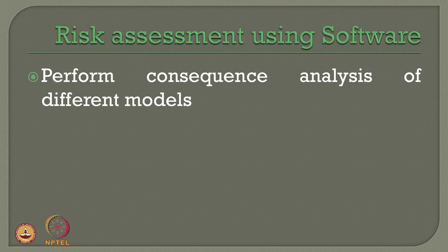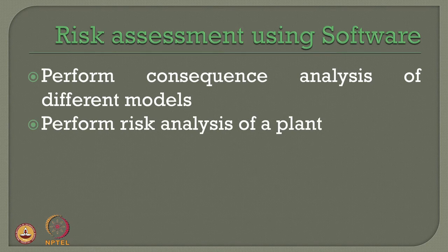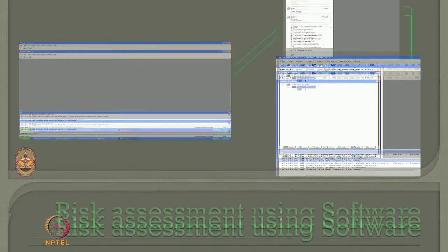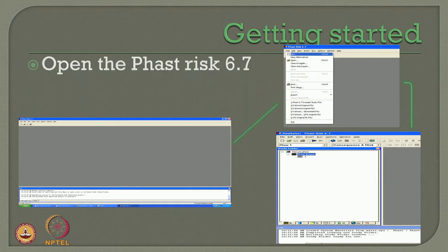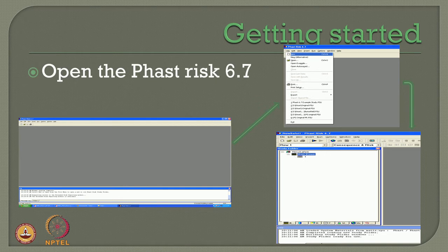We would like to perform consequence analysis using different models and risk analysis of a process plant using the software. The software is PHAST Risk, developed by DNV, which I am going to explain step by step. I will also run a quick video of how this software can be implemented and used by practicing professionals. I am referring to version 6.7, and I would urge viewers to contact DNV Software for the latest version. This lecture will focus on step-by-step use of PHAST Risk 6.7 for offshore and petroleum industry engineers.